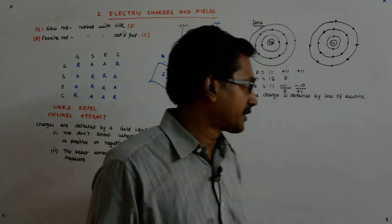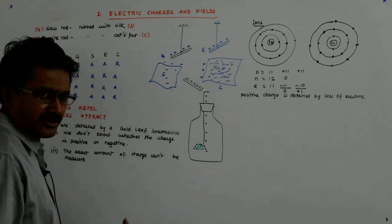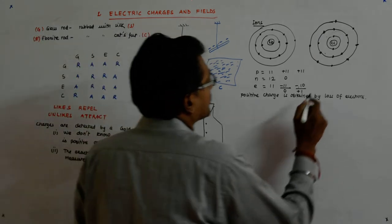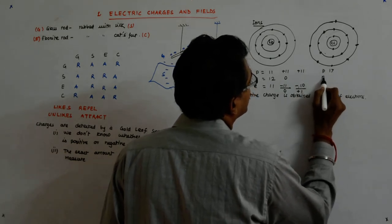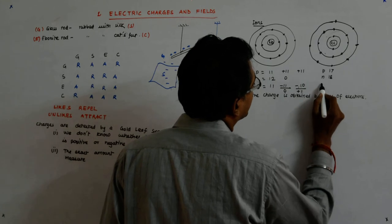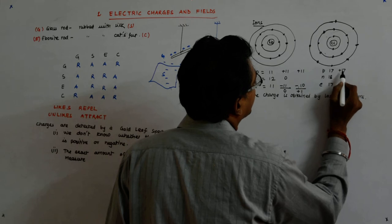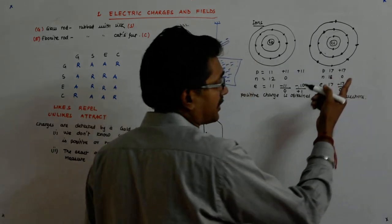That's how you get a positive charge. It is nothing but the absence of electrons. Here the protons are 17, the neutrons are 18, the electrons are 17. So it gives you plus 17, 0, minus 17. The net is 0 here.